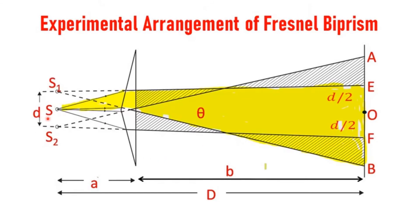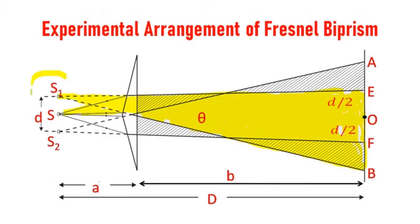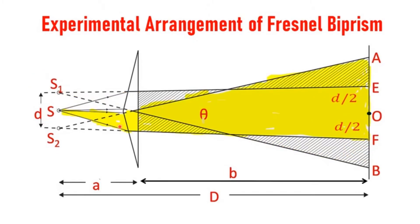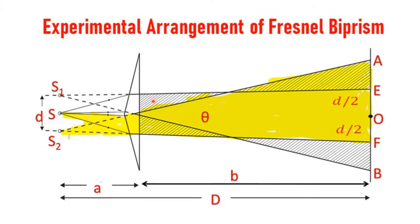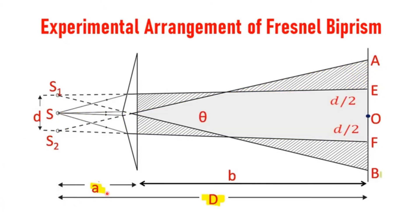The monochromatic source of light incident on the upper part of the biprism refracts such that rays E to B appear to originate from virtual source S1. The light incident on the lower portion refracts such that rays A to F appear to originate from virtual source S2. The distance between the source and the prism is small a, the distance between the prism and the screen is b, and the total distance between source and screen is capital D. The two virtual sources are coherent, having a separation d.